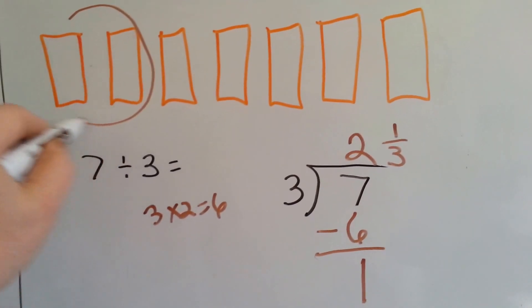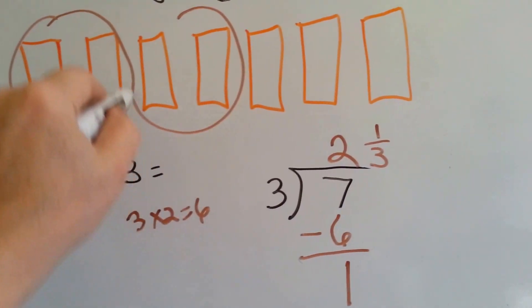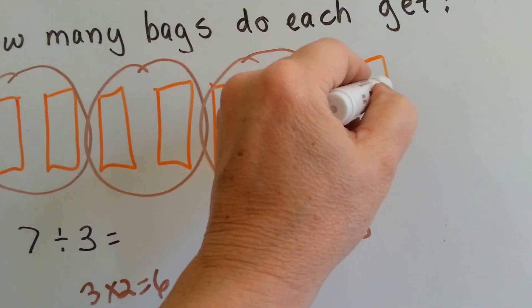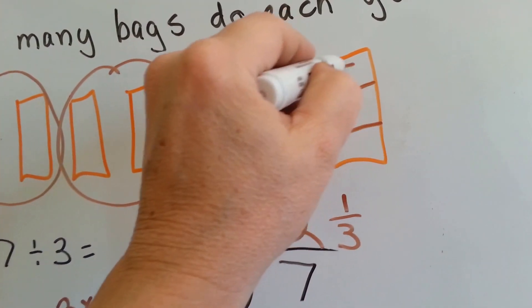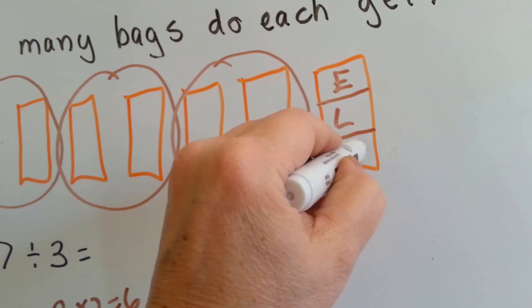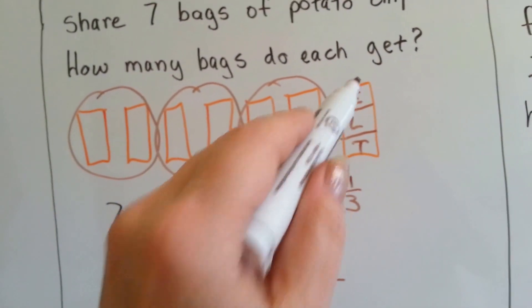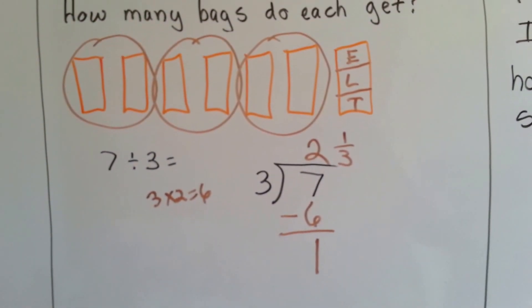Let's see. Here's Emma's. Here's Lisa's. Here's Tim's. And the last bag gets split into three parts between Emma, Lisa, and Tim. So they each get two and one third bags of chips. See?